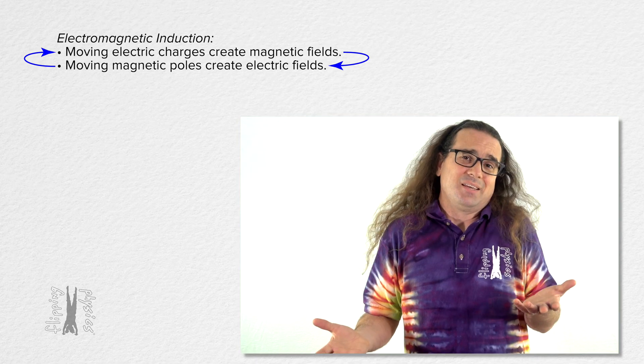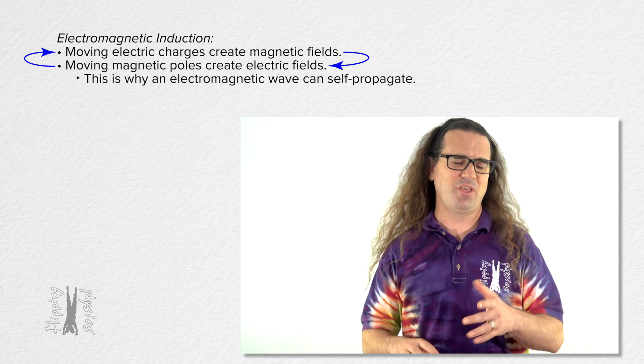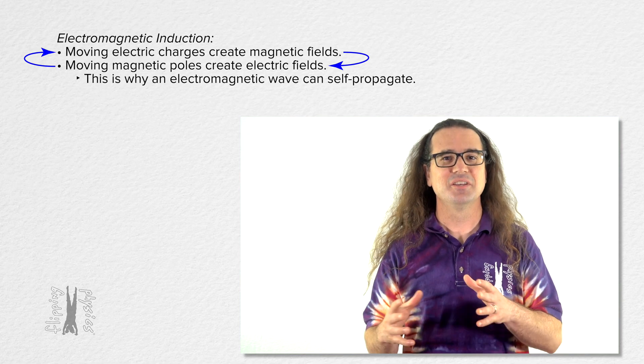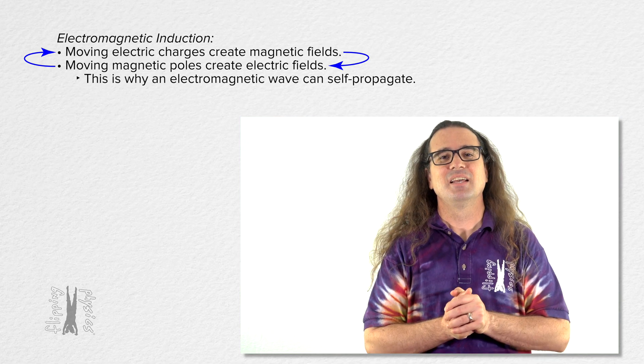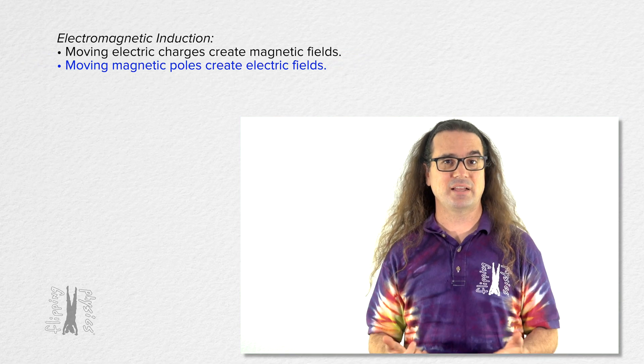Yeah, exactly. Which is basically why an electromagnetic wave can self-propagate. But we're getting ahead of ourselves with that bit of logic. Let's just return to the fact that moving magnetic poles create electric fields.